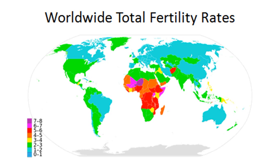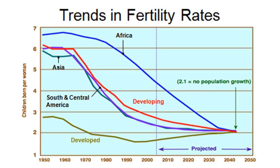This graph shows the fertility rate changing in countries around the world, with emphasis on developing and developed countries, Asia, South and Central America, and Africa. The developed world is in some cases having fewer than two children per woman, meaning those populations may actually start declining. As soon as all countries reach 2.1 as the total fertility rate, we'll be at replacement level fertility and should see a pretty stable world population.